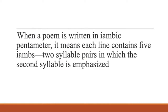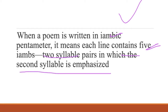When a poem is written in iambic pentameter, it means there are five iambs — five iambs means five two-syllable pairs. Pentameter means five feet, and one foot equals two syllables, so there will be ten syllables in pentameter. Iambic means the first syllable will be unstressed and the second will be stressed.